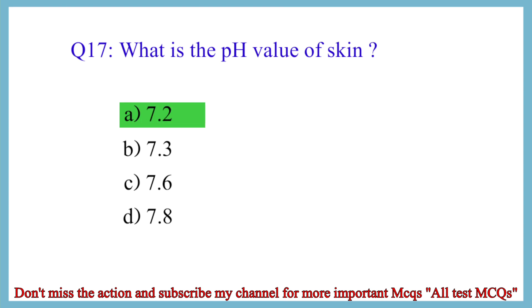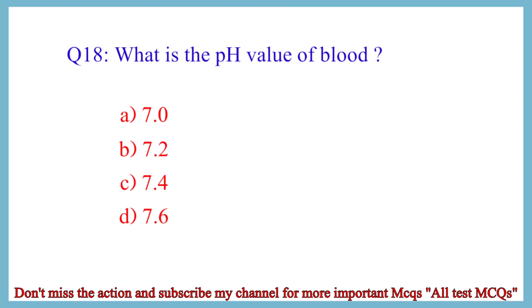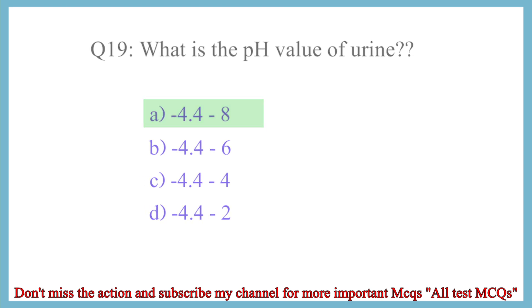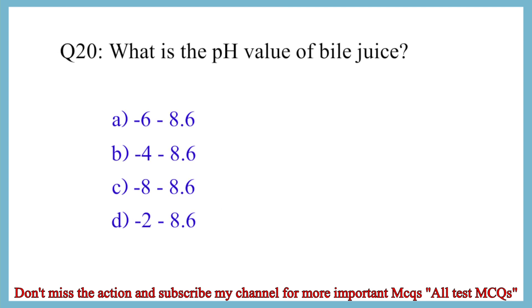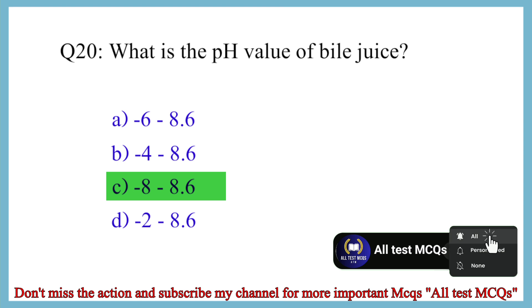Question No. 17. What is the pH value of skin? The correct answer is option A: 7.2. Question No. 18. What is the pH value of blood? The correct answer is option C: 7.4. Question No. 19. What is the pH value of urine? The correct answer is option A: 4 to 8. Question No. 20. What is the pH value of bile juice? The correct answer is option C: 8 to 8.6.